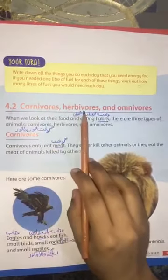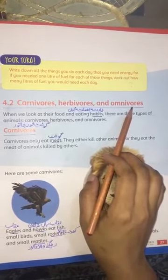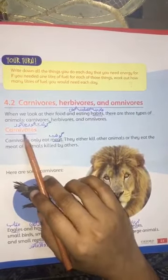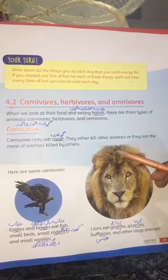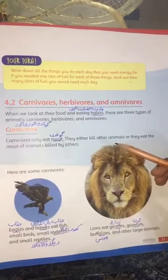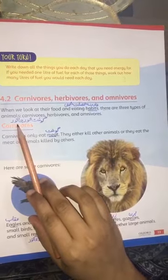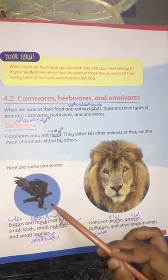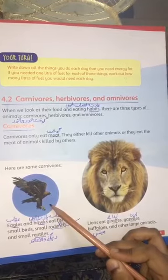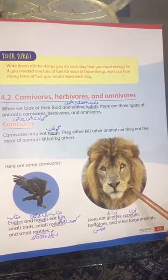Your next topic is 4.2: Carnivores, Herbivores and Omnivores. If we look at the animals and the way of eating, these three types of animals are divided. Your first one is carnivores. Carnivores means ghost — janwar. This is a genre which eats meat. Like in the picture of the eagle eating fish and little birds. If we take a look at the animals, this is a genre which eats ghost — meat.